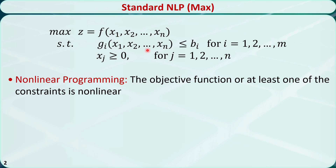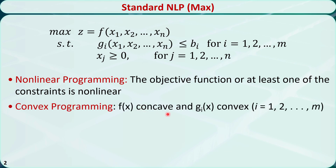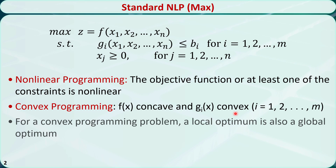Traditional operations research techniques can only solve some special nonlinear programming problems. For example, if the objective function is concave and all the constraints are convex, this problem is called a convex programming problem. For a convex programming problem, a local optimum is also a global optimum.